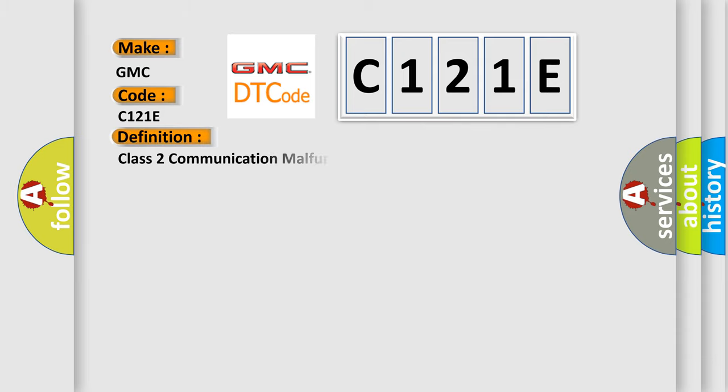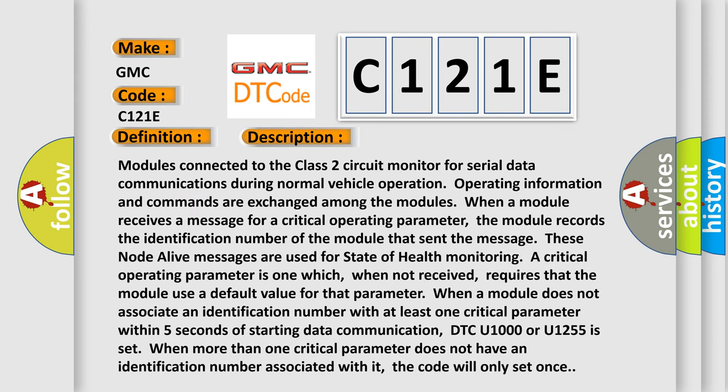The basic definition is Class 2 communication malfunction. And now this is a short description of this DTC code.